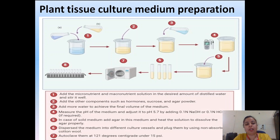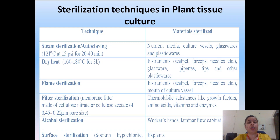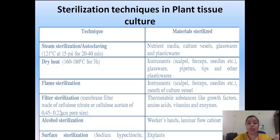After sterilization, the medium is taken out, allowed to cool down, and then used for the further process. So an important step of plant tissue culture medium preparation is finished. The next step is sterilization, which is again a critically important step in the plant tissue culture process.